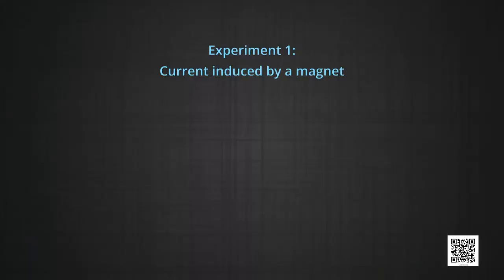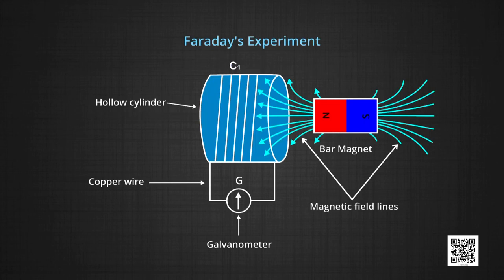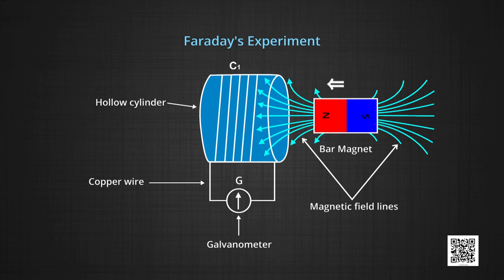We shall now discuss some of the experiments carried out by Faraday and Henry. Experiment 1: current induced by a magnet. Let us take a coil C1 connected to a galvanometer G as shown in the figure. Normally in such a setup the meter would not deflect as there is no source of EMF. We also have a bar magnet which can be moved in and out of the coil. We observe that when the north pole of the bar magnet is pushed towards the coil, the pointer in the galvanometer deflects, indicating the presence of electric current in the coil.